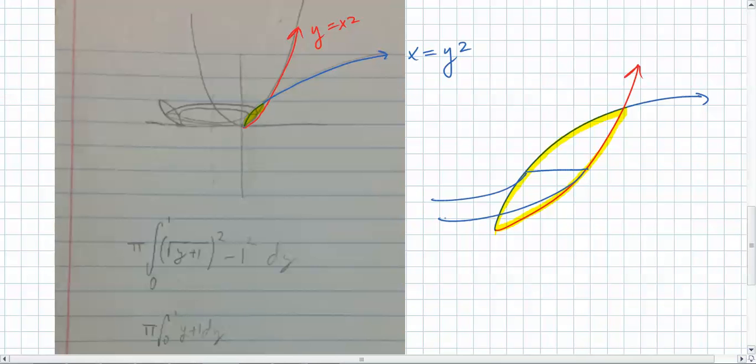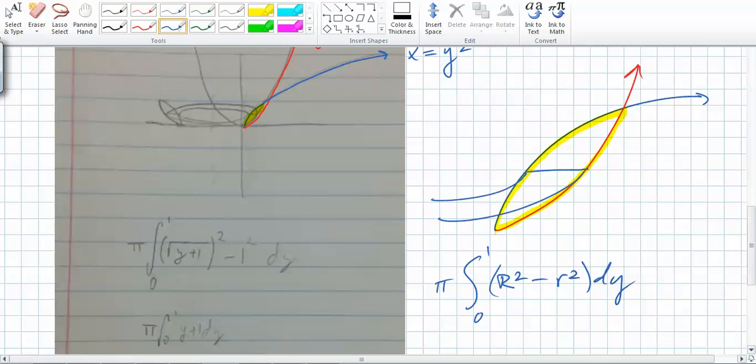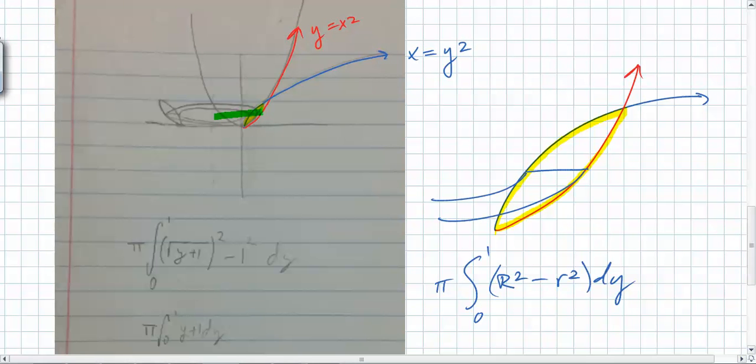The challenge now is that you need to write equations for the big radius and the little radius. The formula you're dealing with is pi from, we'll do the limits later, big r squared minus little r squared. So the first question to answer is, are we integrating with respect to x or y? y. Because the washer is perpendicular to the y-axis. So this thing is dy. What's the lower bound of this integral going to be? What's the lowest y value? Zero. And the upper one is 1.